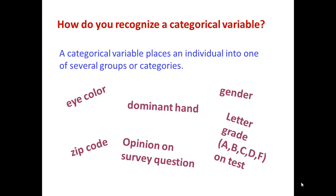Here are some examples of categorical variables. Notice that zip code, although it contains numbers, puts people into categories representing a geographic location.